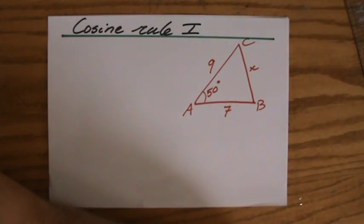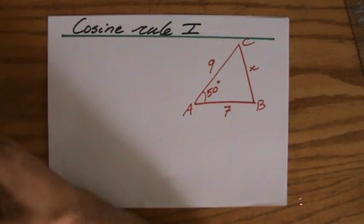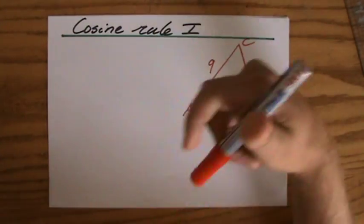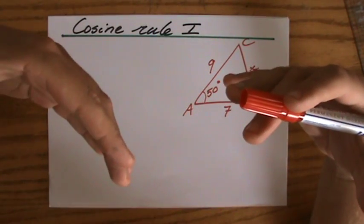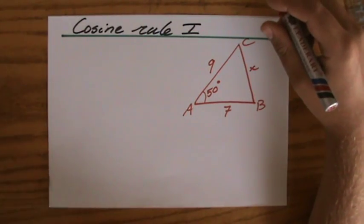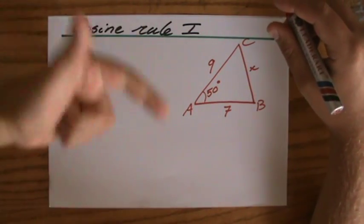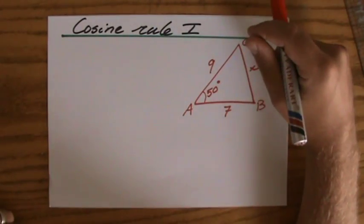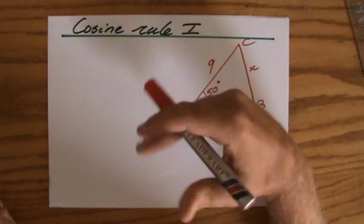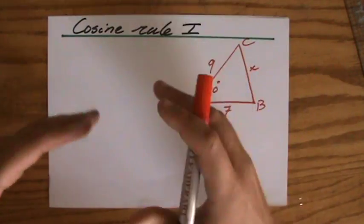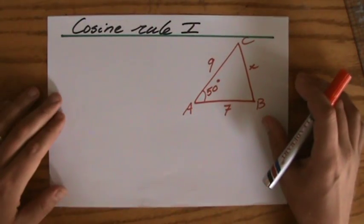So the last thing we're going to be doing together is the cosine rule. And don't worry too much — you have had the Pythagoras theorem, you have done the ordinary trigonometry, you have the sine, the cosine, the tangent, you have done the sine rule, and now we are doing this cosine rule. Trust me, after this it's finished — this is the last one. No more unpleasant or pleasant surprises.